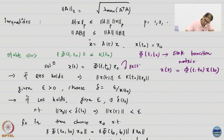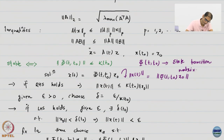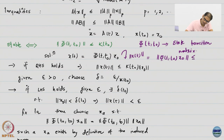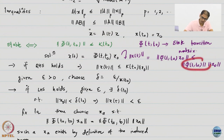The norm of x is actually equal to the norm of the state transition matrix multiplied by the initial condition vector, which by this property is less than or equal to the norm of phi(T, T0) times the norm of x0 — just by using the induced norm inequality, not doing anything fancy. And I have already assumed that the right-hand side is true, so I have an upper bound on this.